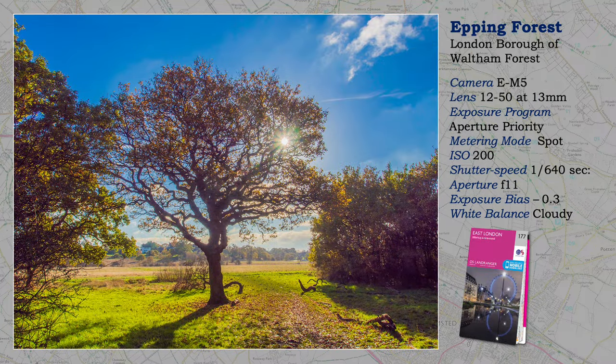Any shot that includes the sun risks flare — a degradation of the image with streaks of harsh light across it. A small aperture reduces the risk, particularly when using a zoom lens, but a small aperture can also reduce the quality of the image. Positioning the sun behind a tree has permitted me to use F11, an aperture that could normally cause flare without the tree acting as a mask.